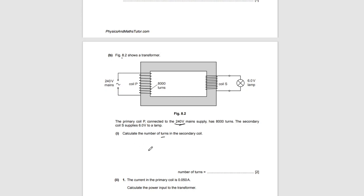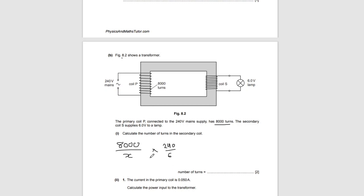It says calculate the number of turns on the secondary coil. You cross-multiply: the primary has 8,000 turns and we don't know the secondary. The formula sets up as 8,000 over the unknown secondary turns equals 240 over 6, where 240 is the primary voltage and 6 is the secondary voltage.